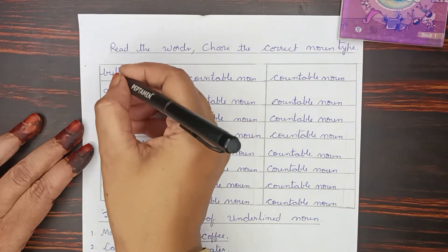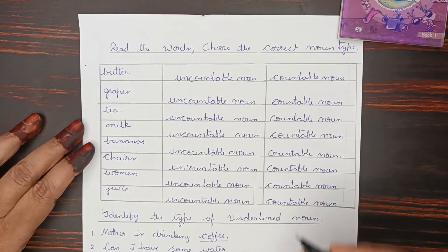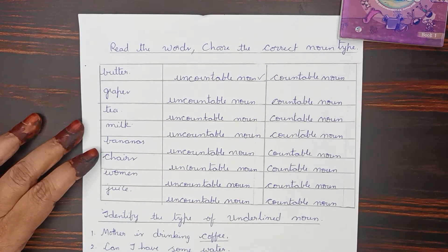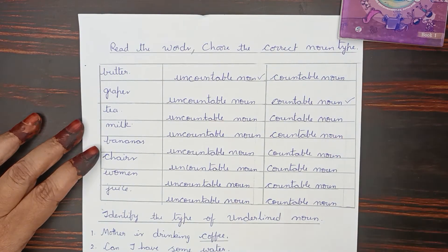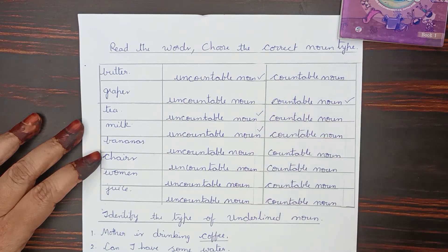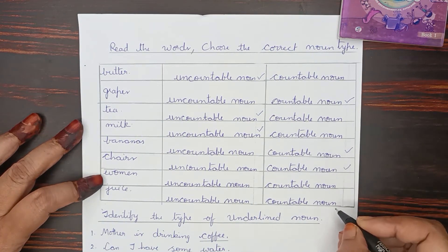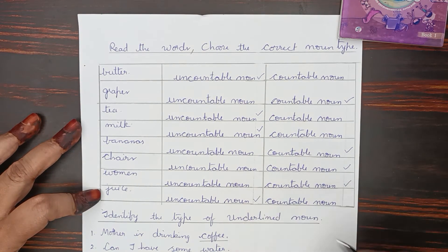Butter — uncountable. Grapes — countable noun. Tea — uncountable noun. Milk — uncountable. Bananas — countable. Chairs — countable. Women — countable. Juice — uncountable noun.